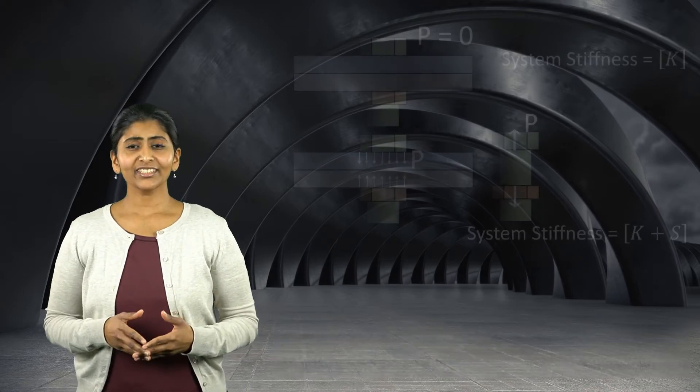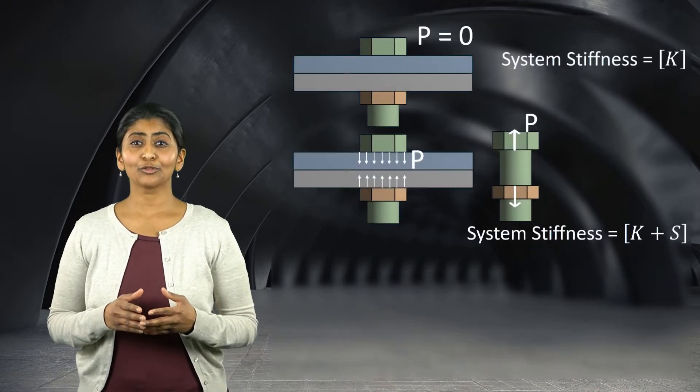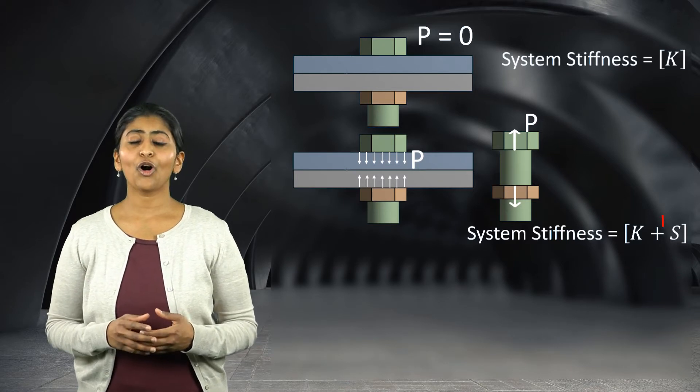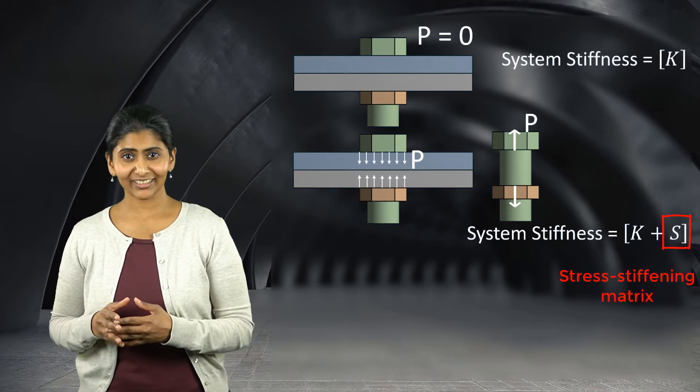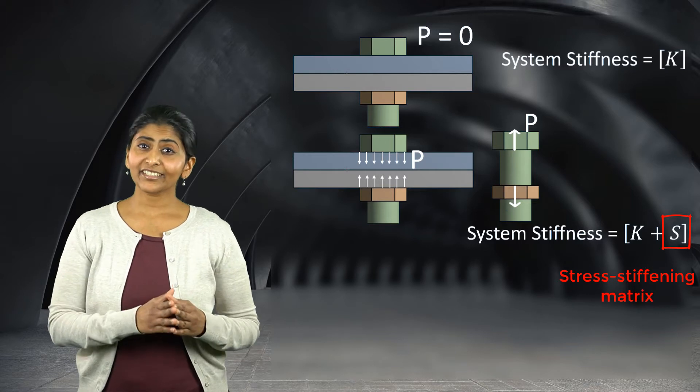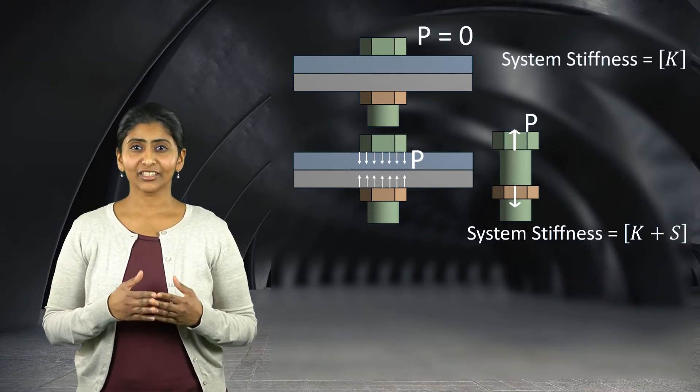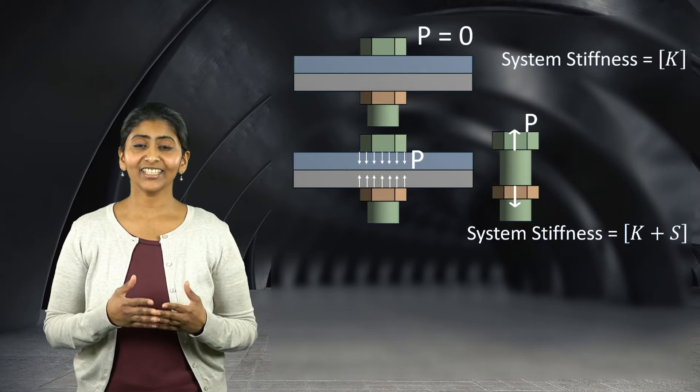When we do this, the change in stiffness due to preload in step 1 is calculated in the form of a stress stiffening matrix, and when we apply external loads in step 2, the modified system's response due to stress stiffening is considered.